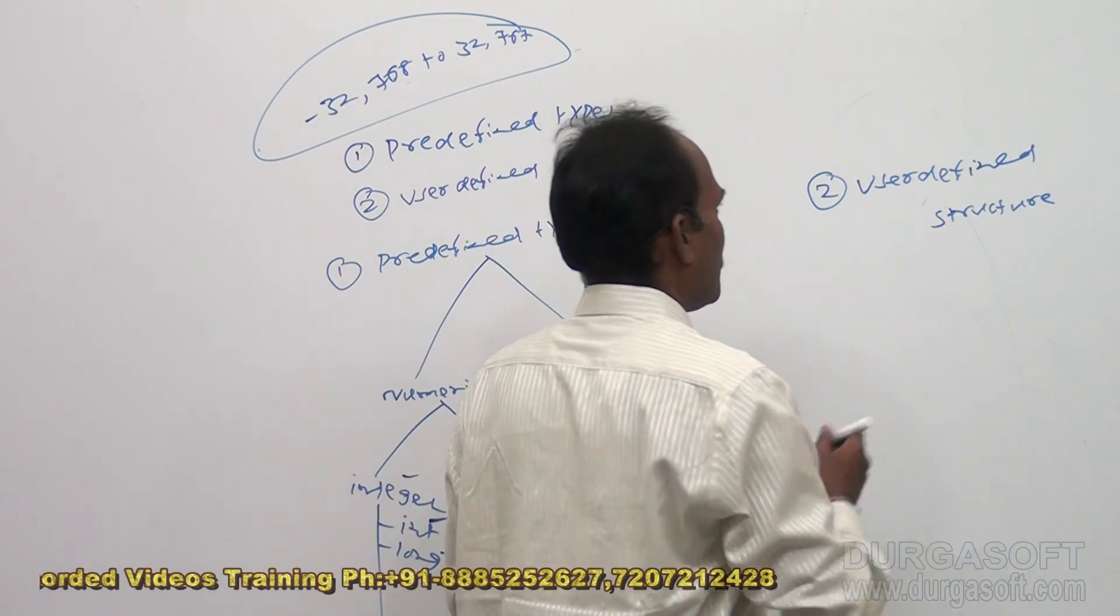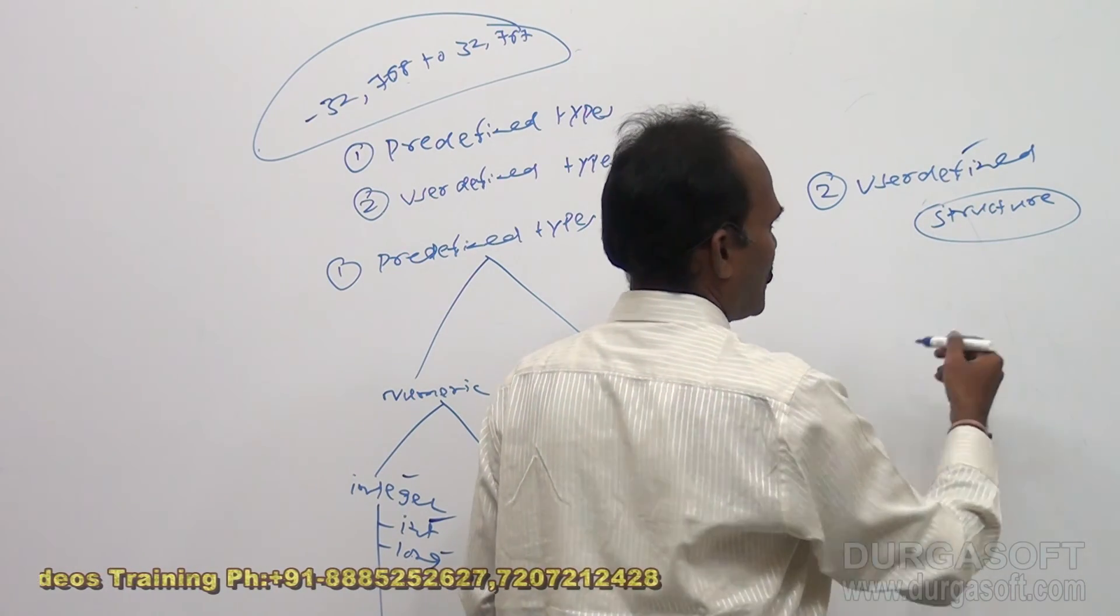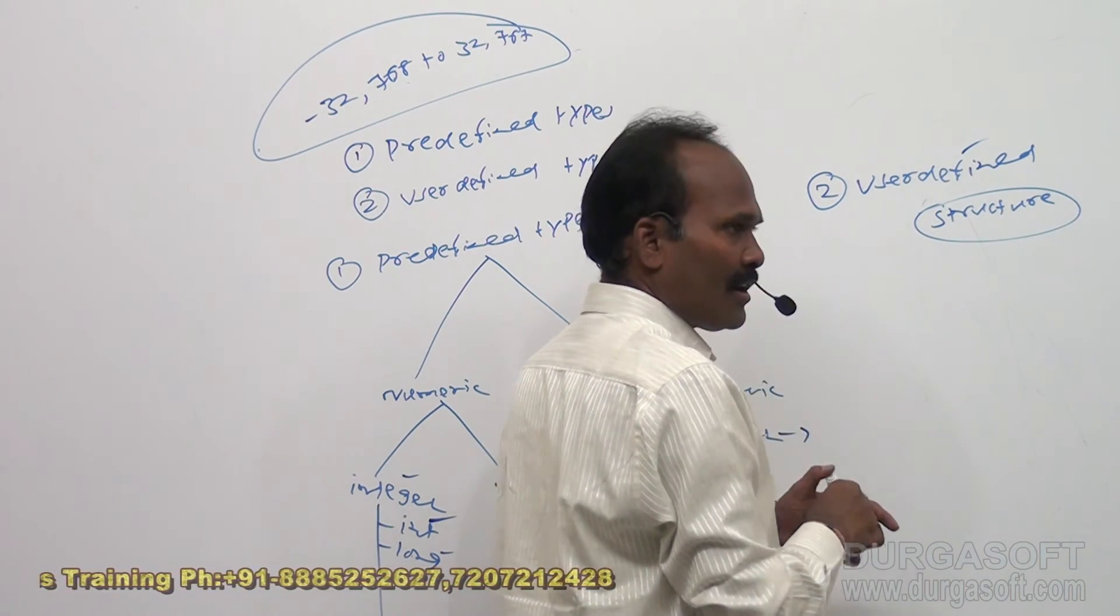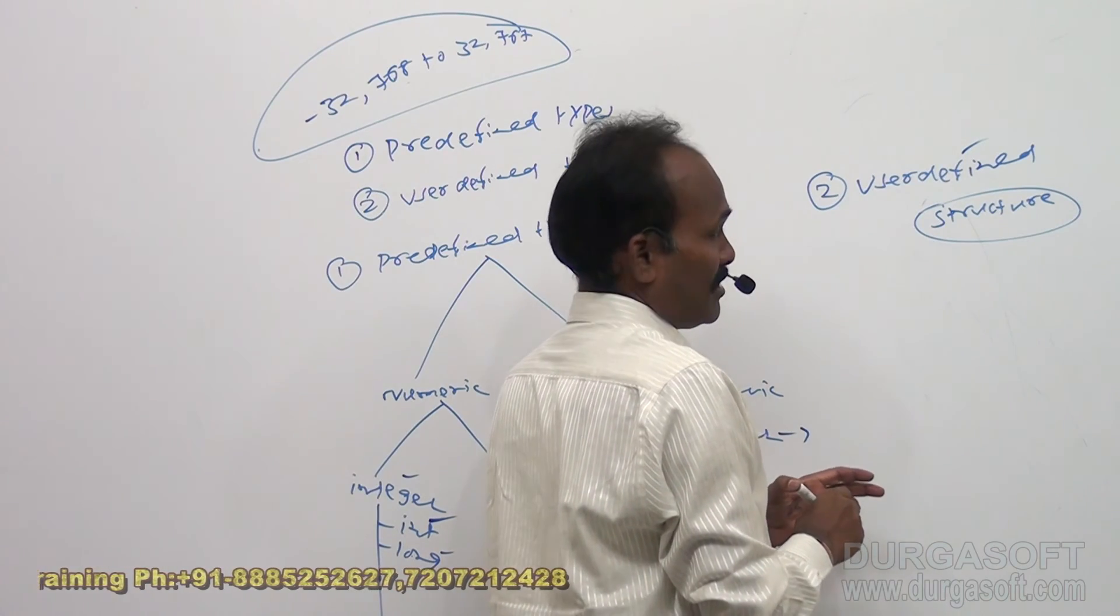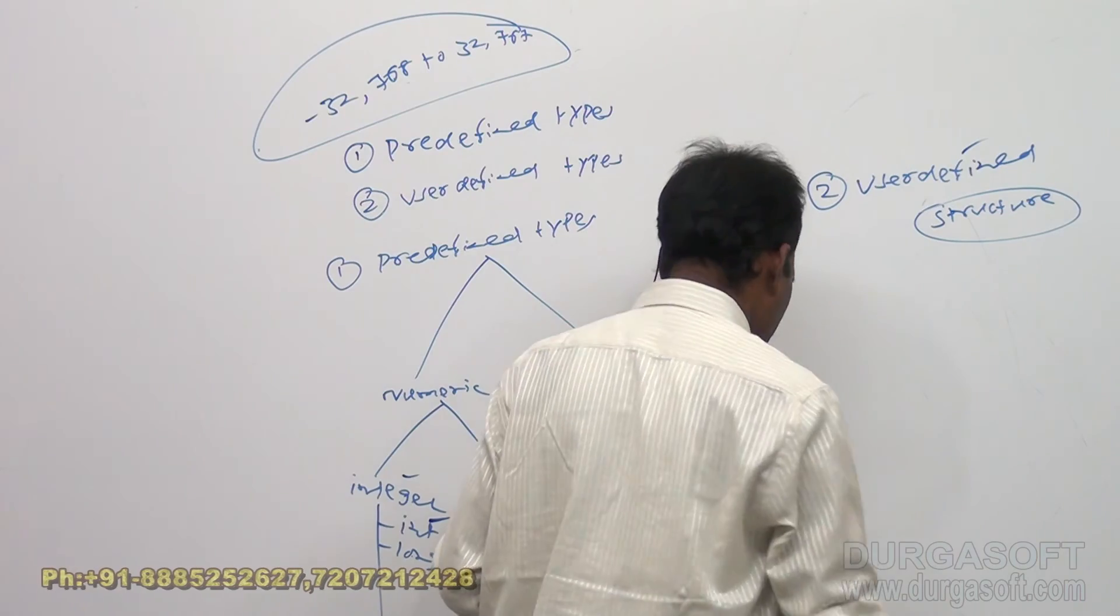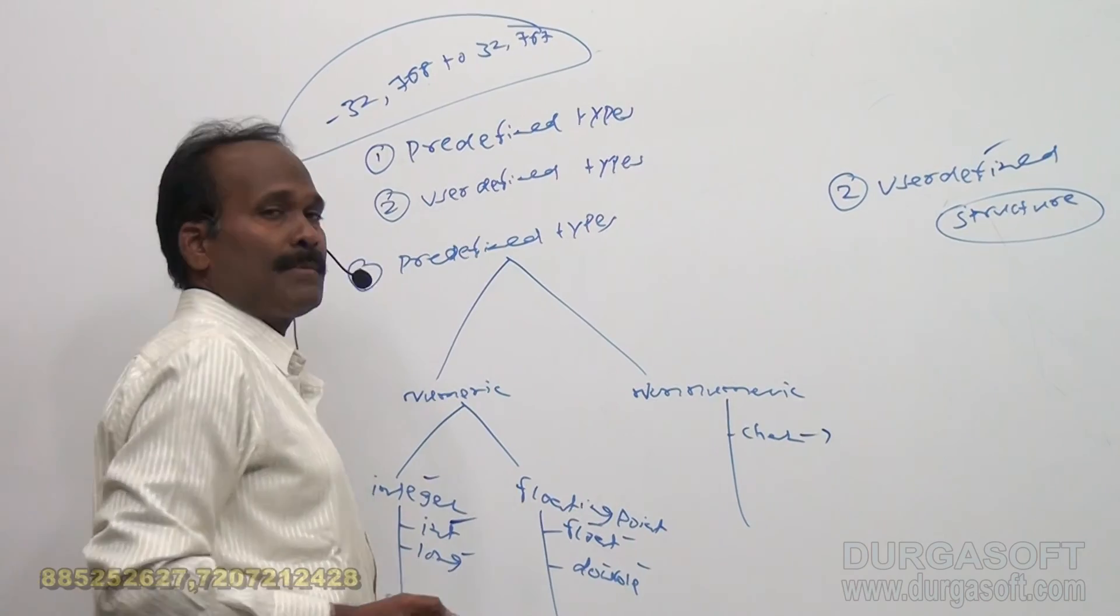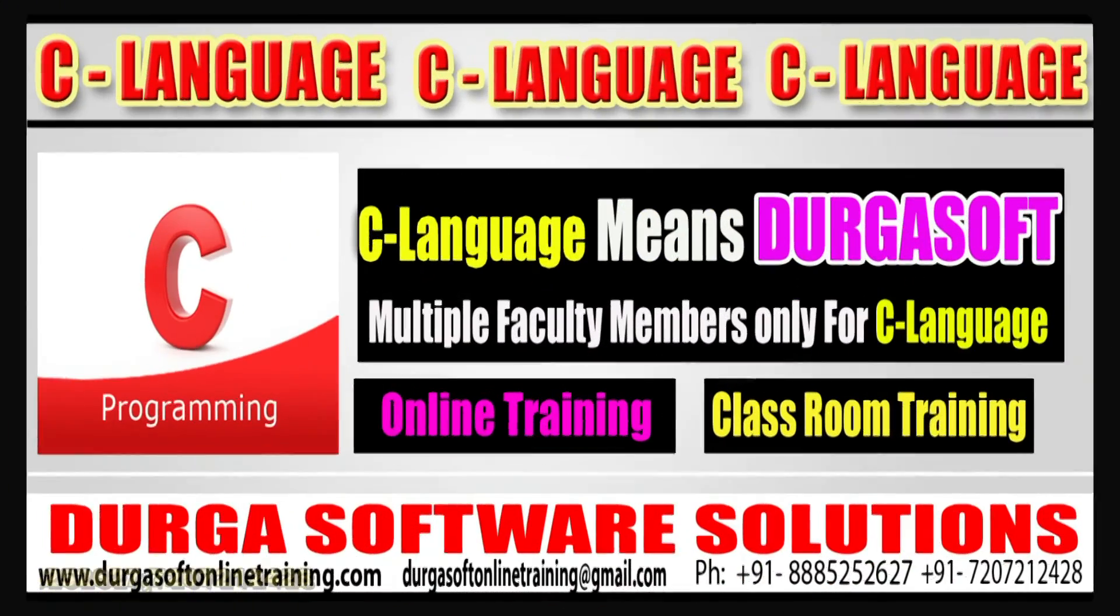So when coming to user defined types, so structures, so structure means so we are going to define our own types using structure concepts. So when topics comes I will explain it very clearly. Okay, so this is the story regarding data types of C language. Thank you in this video.